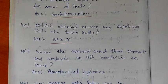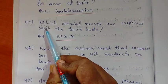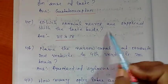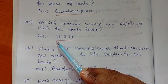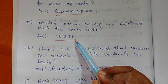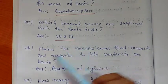Next, question number 45: Which cranial nerves are supplied with the taste buds? Answer: cranial nerves VII and IX.